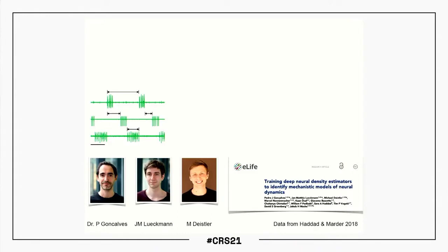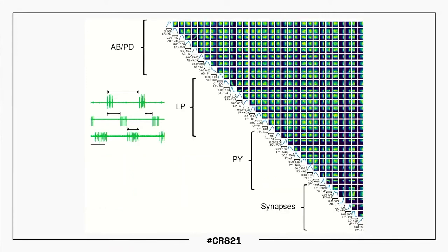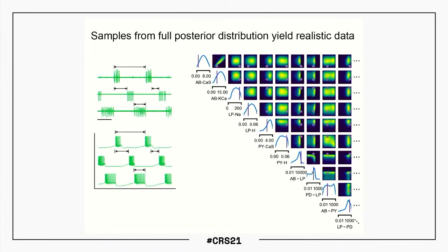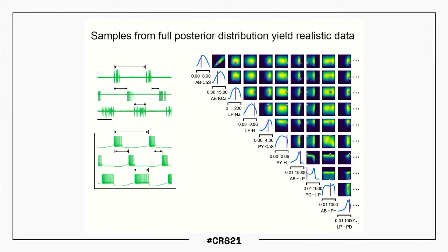This was part of a study by Pedro Gonsalves, Jan-Matthias Lueckmann, and Michael Deistler, published in eLife a few years ago. Taking this piece of data as input, we can get a posterior distribution — in this case a 31-dimensional posterior over the parameters of this model. We can check whether the results are plausible by generating samples from the model, and we find that the samples very much match the data we put in.